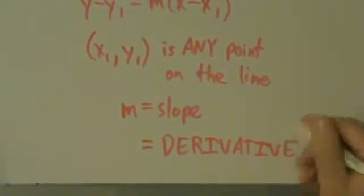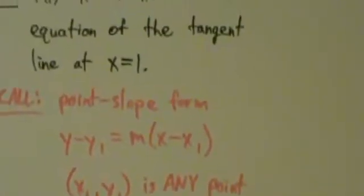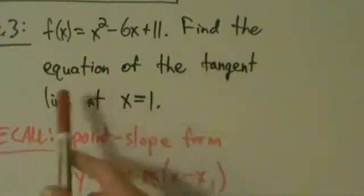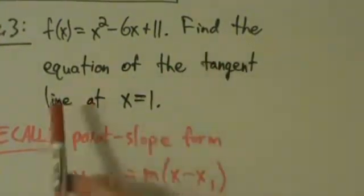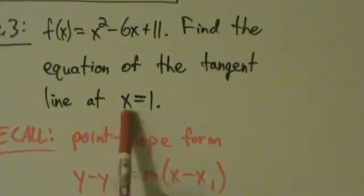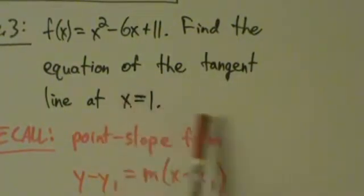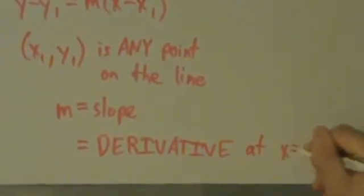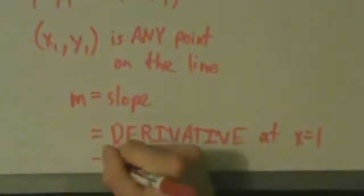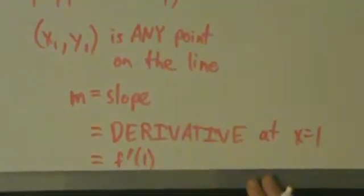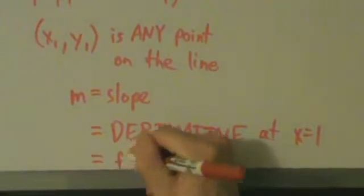Because we're talking about a tangent line, the slope m equals the derivative. We want the equation of the tangent line, so we need the slope of the tangent line. The slope of the tangent line is the derivative at x equals 1 — in other words, f prime of 1.